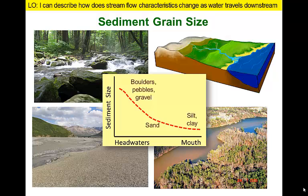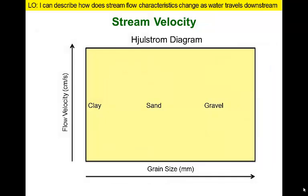Flow velocities can vary daily or seasonally, resulting in different materials being eroded, transported, and deposited at different times. Exactly what is happening at any given time is largely dependent upon the velocity of the stream flow. We are going to use a type of graph known as the Hjulström diagram to illustrate key concepts about the erosion, transportation, and deposition of different particle sizes.